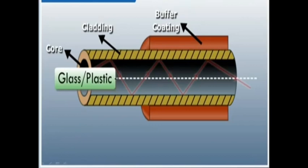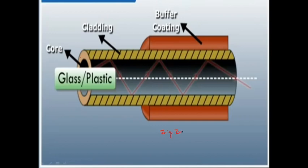Now looking at the optical fiber structure again: we have the core, cladding, and outer layer for protection, made of either glass or plastic. Inside the fiber, light rays propagate in a zigzag path — this is due to total internal reflection occurring at the core-cladding interface.